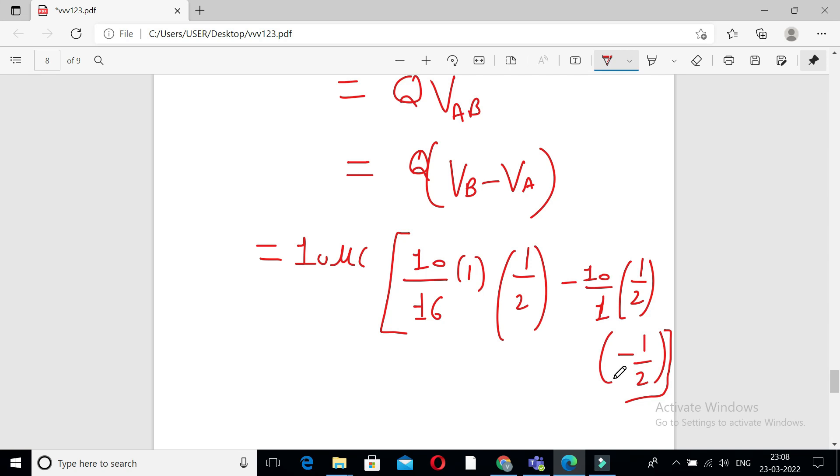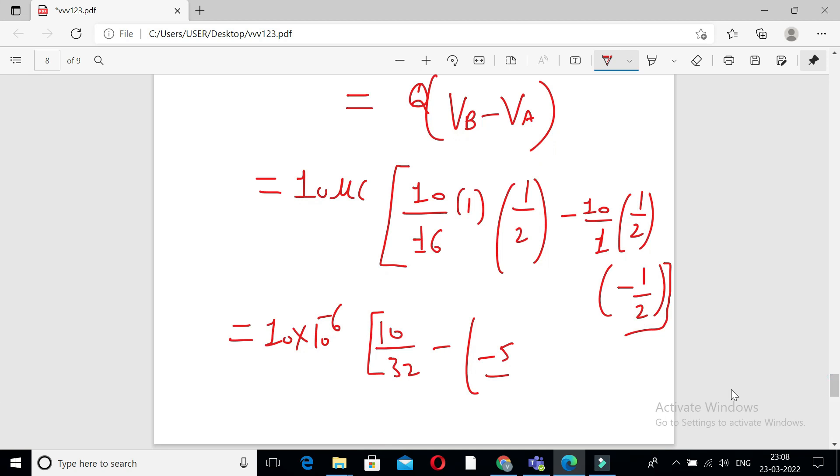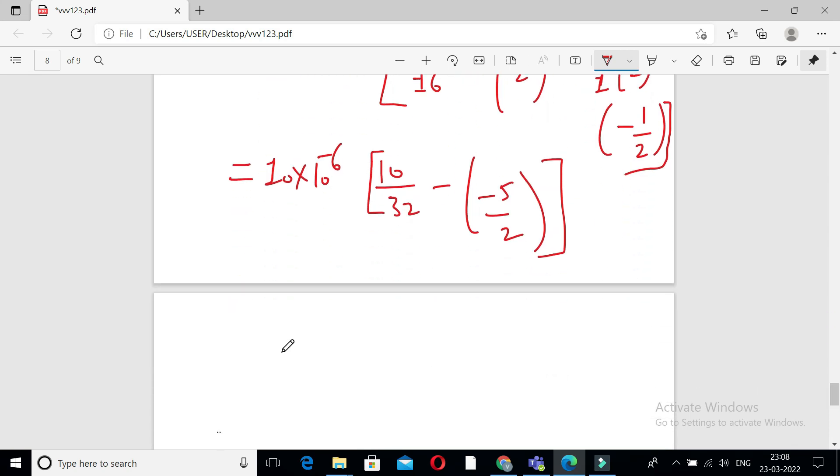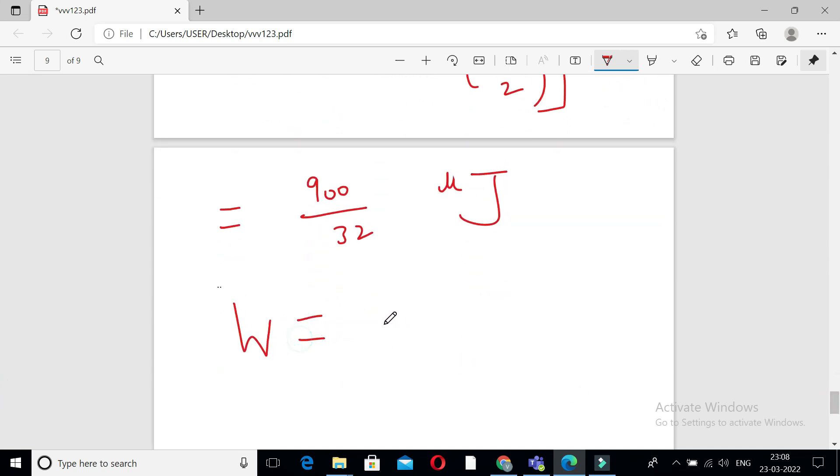So we get 10 times 10 to the power minus 6, 10 upon 32 minus of minus pi. So we get the value of work done in microjoules.